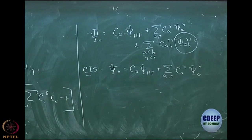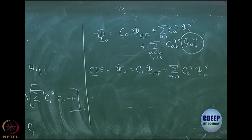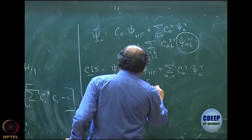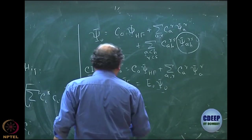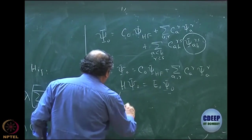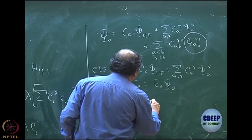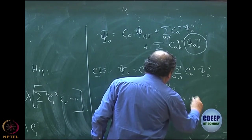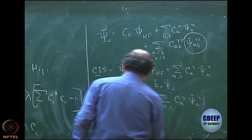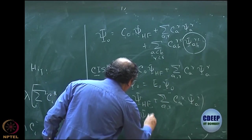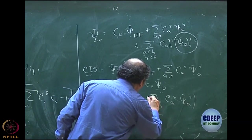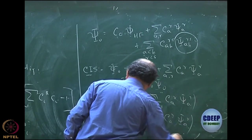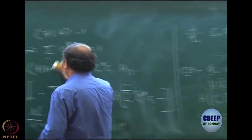Let us take a simpler approximation which I now call CIS — configuration interaction including only singly excited determinants. S is an acronym that just means singles. I can now derive this using the method of projection. You write: psi = C_0 psi_HF plus sum over A,R of C_AR psi_AR. The Schrödinger equation becomes: H(C_0 psi_HF + sum C_AR psi_AR) = E(C_0 psi_HF + sum C_AR psi_AR).